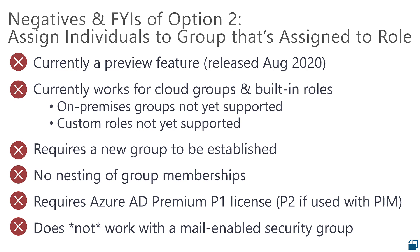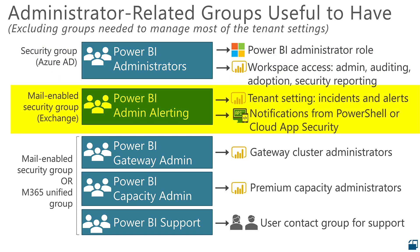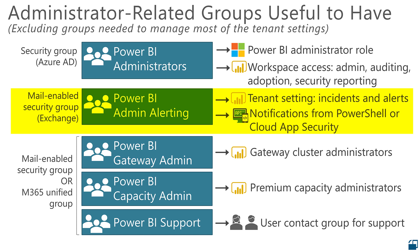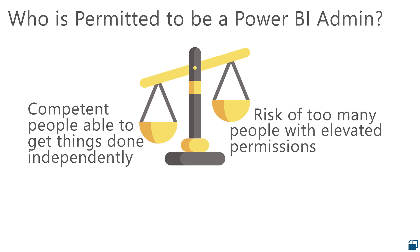This last item is really important, as we're about to see. There are a few types of groups you're likely to have when managing Power BI, excluding the groups needed in the tenant settings to grant or deny access to specific features. The top one listed is the group we've been discussing, which aligns to the built-in administrator role. The second one relates to things we need for when we want to be alerted — specifically, the tenant setting about incidents and alerts requires a mail-enabled security group. So the trade-off I'm proposing is to centralize as much as we can into the main Power BI administrator group and maintain a second group related to notification or alerting needs. You might be able to consolidate some or all of the last three groups depending on how much flexibility you want in managing your groups.